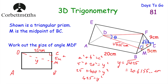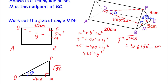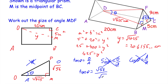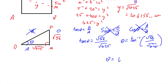Now we've got right angle triangle DMF. DM equals root 425 centimetres and MF equals root 56 centimetres. Labelling our sides: opposite the right angle is the hypotenuse, opposite angle theta is the opposite, and the other side is the adjacent. We're not finding the hypotenuse, so we cross off sine and cosine and use tan. Tan θ equals opposite over adjacent: tan θ equals root 56 divided by root 425. So θ equals inverse tan of (root 56 / root 425), giving θ equal to 19.95 degrees to two decimal places.